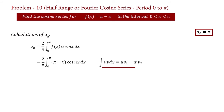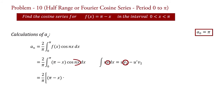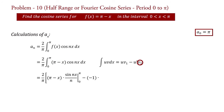Applying the formula, we write: aₙ equal to 2 upon pi into, here u equal to pi minus x times v₁ which is integration of cos(nx) giving sin(nx) upon n, minus u' which is minus 1 times v₂ which is integration of sin(nx) upon n giving minus cos(nx) upon n², with limit 0 to pi.